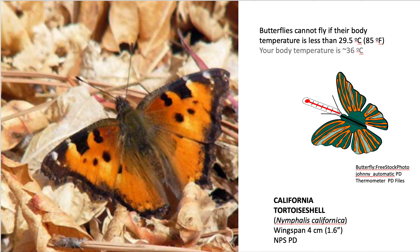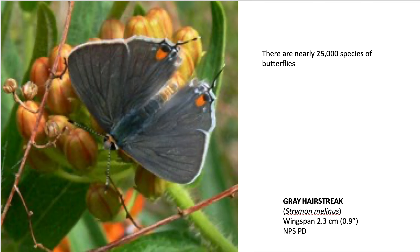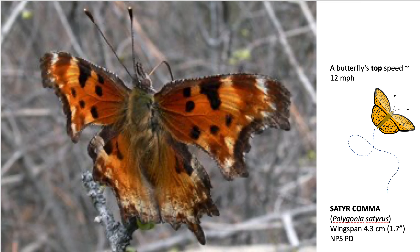Butterflies can't fly if their body temperature is less than about 30 degrees Celsius (85 degrees Fahrenheit). Your body temperature is about six degrees warmer than that, and butterflies like to be even warmer. There are also a massive number of species — if you think about the types of butterflies you normally see, it's a very small number in comparison.